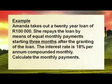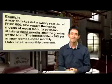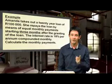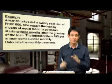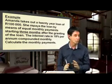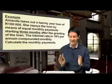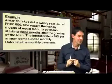Here's something that Amanda did. Amanda takes out a 20-year loan of 100,000 Rand. She repays the loans by means of equal monthly payments, starting three months after the granting of the loan. The interest rate is 18. I'm going to pray for you, Amanda. 18% per annum compounded monthly. They love your money. Watch out for credit cards and that kind of thing. They're good things. But if you have to pay the minimum payment, you are going to be big time in the poo. Calculate her monthly payments.